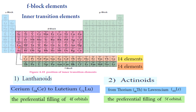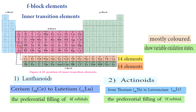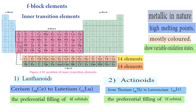The general properties of f-block elements include variable oxidation states — the common oxidation state is +3, with +2 as the lowest and +4 as the highest; actinoids can show +6. Most f-block elements are colored, especially the actinoids. They have high melting points and are metallic in nature.